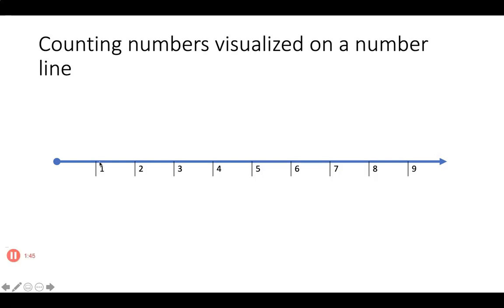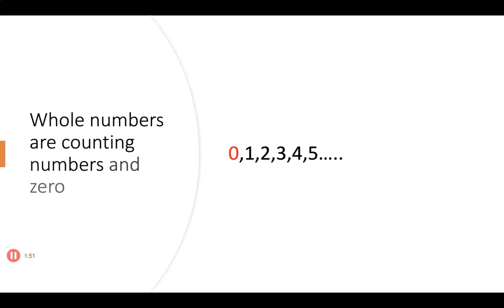Now if we move on from the counting numbers to the next type of numbers called the whole numbers. The discovery of the number zero was a big step in the history of mathematics. Including zero with the counting numbers gives us a new set of numbers called the whole numbers. So whole numbers simply are the counting numbers and zero.